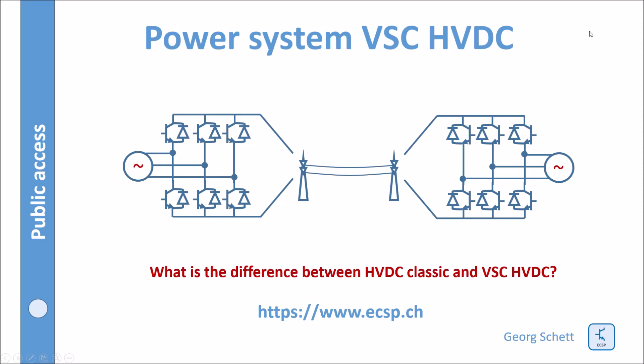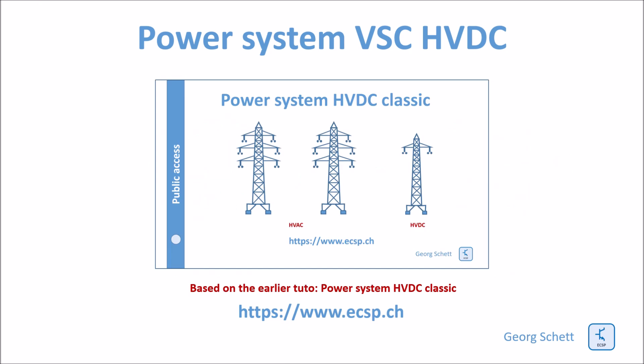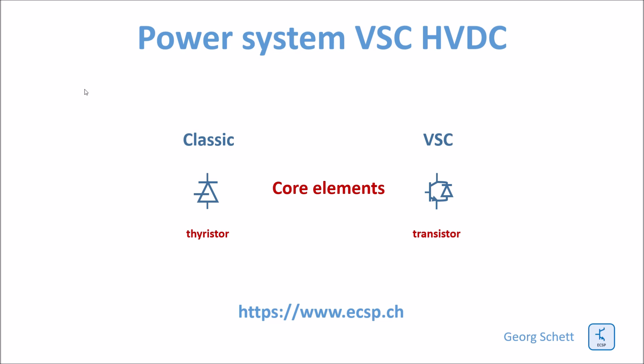Let's talk about the voltage source converter HVDC technology and compare it to HVDC Classic. The VSC technology is more modern. The big advantage is it can be used for black starts — it can feed power into a network which does not provide an active source. This is the key difference to HVDC Classic, where you need an active load with an existing power source. The core switch of HVDC Classic is a thyristor, whereas for VSC HVDC the core element is a transistor.